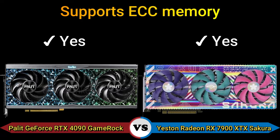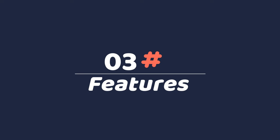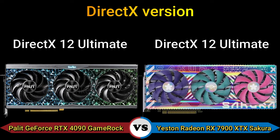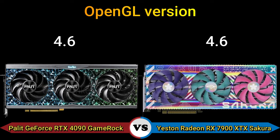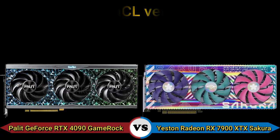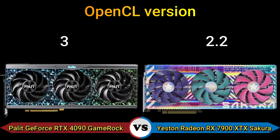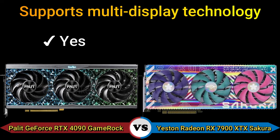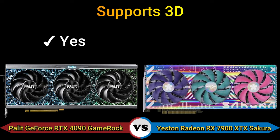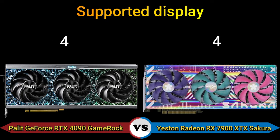Part 3 — APIs and display. DirectX version: DirectX 12 Ultimate. OpenGL version: 4.6. OpenCL version: 3 and 2.2. Supports multi-display technology: yes. Supports 3D: yes. Supported displays: 4. HDMI ports: 1.